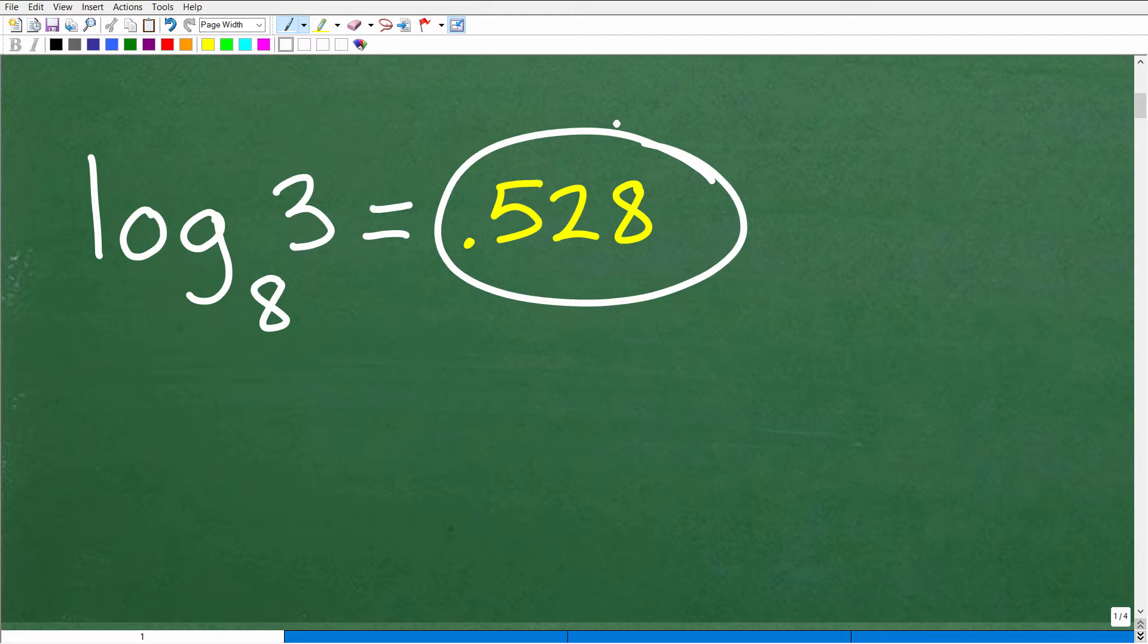Okay, so I want to make sure I'm saying this correctly. This is log base 8 of 3. This is what we want to find. And of course, this is the way we would write that, but this is the approximate answer 0.528. So how did you do?